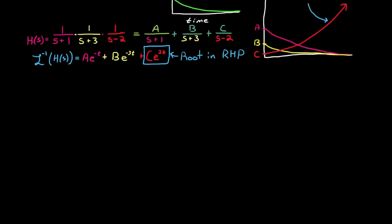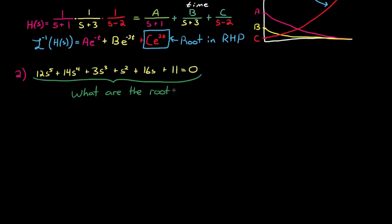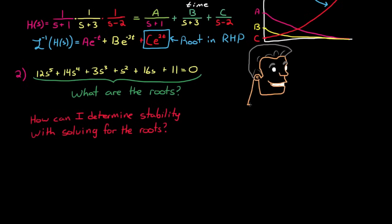So we know that we can determine the stability of a system by solving for the roots of the characteristic equation. But the second thing that we know is that calculating the roots of a system for anything larger than a second order polynomial becomes time consuming and possibly even impossible in closed form, as would be the case if you were given this fifth order polynomial and asked to solve for the roots. So your question might be, how can I determine stability of a higher order polynomial without solving for the roots directly?